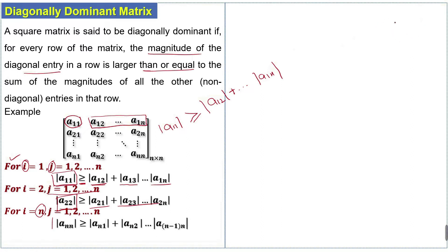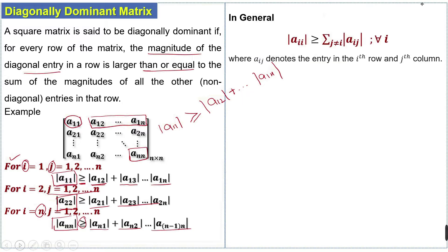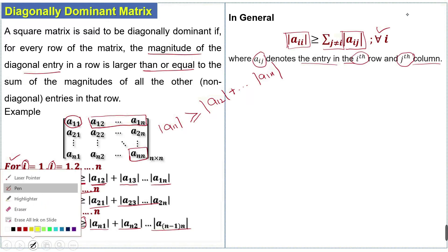In general, the diagonal entry aᵢᵢ must be greater than or equal to the sum of |aᵢⱼ| for all j not equal to i, where aᵢⱼ denotes the entry in the i-th row and j-th column.